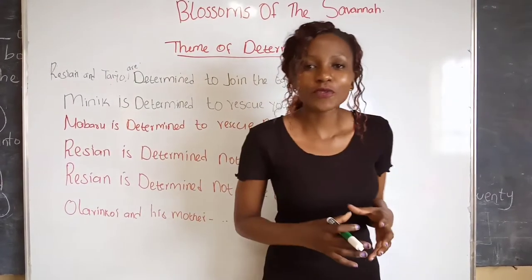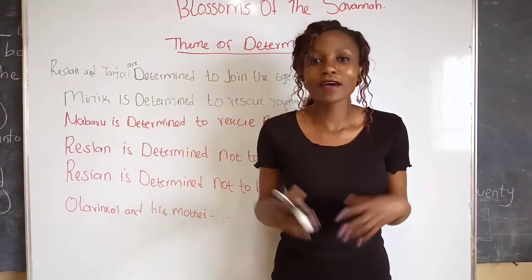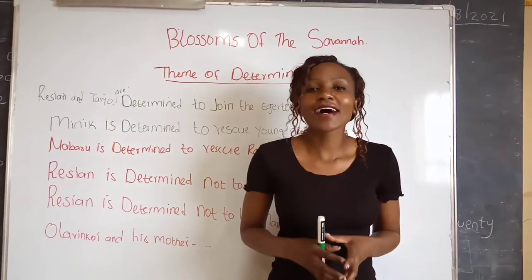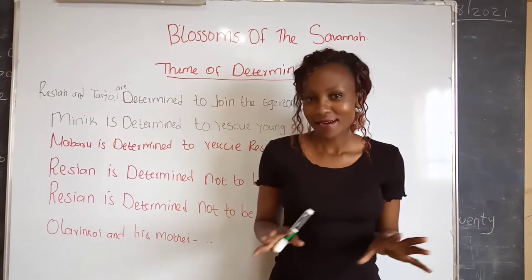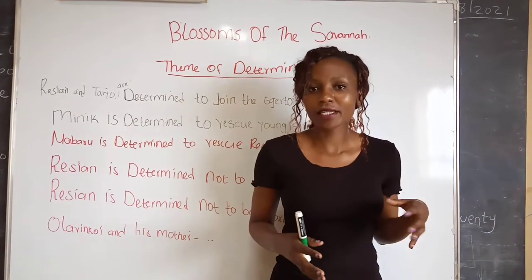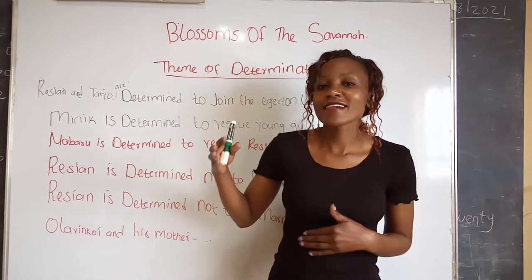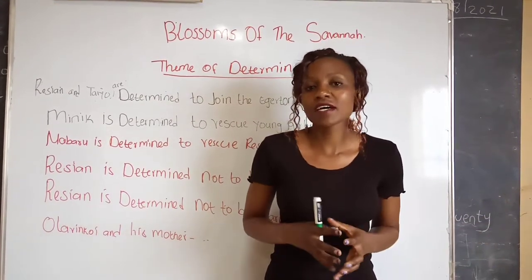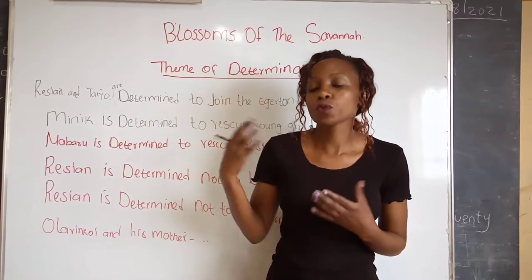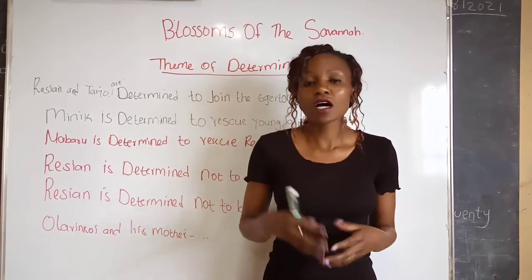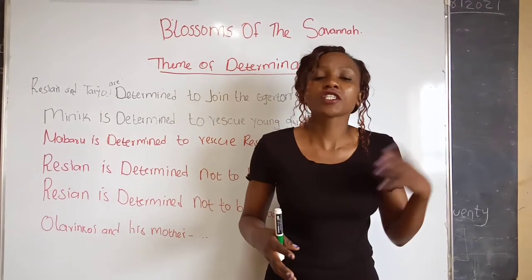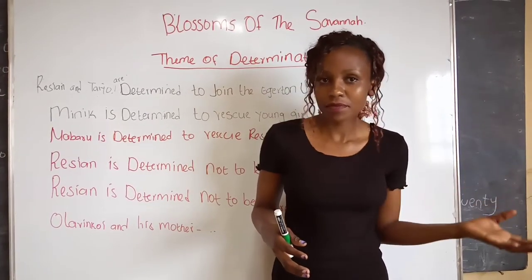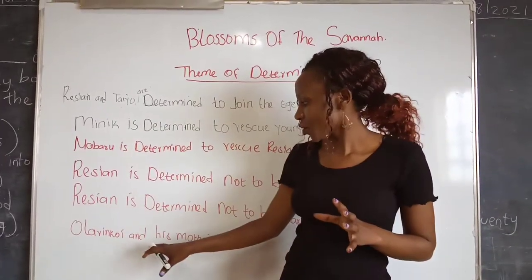The next point is that Resian is determined not to be married by Oloisudori. She told him she would be his wife over her dead body, and she goes to the extent of telling her father she would rather die than get married to that monster. After her father told her he had accepted dowry from Oloisudori, Resian escapes.